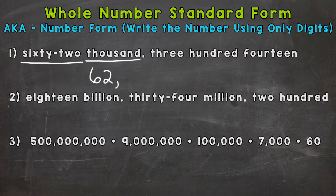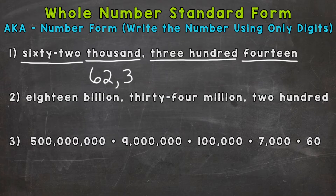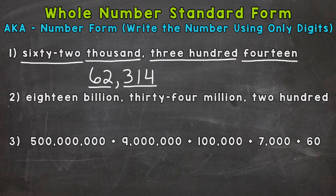We're in the thousands period, and we know the ones period comes next. We have 314 to wrap this up. We need a three in the hundreds because we need a three with a value of 300, then a one in the tens, and a four in the ones. My suggestion is to always double check that your word form and standard form match — read it out loud. In this case, we properly went from word form to standard form: 62,314.